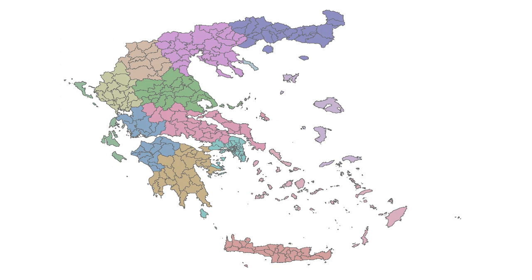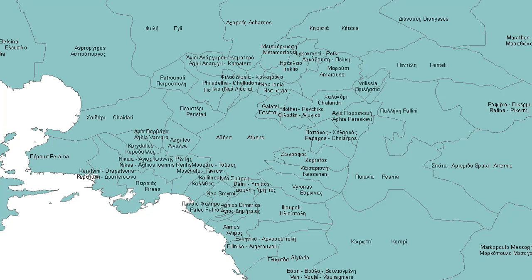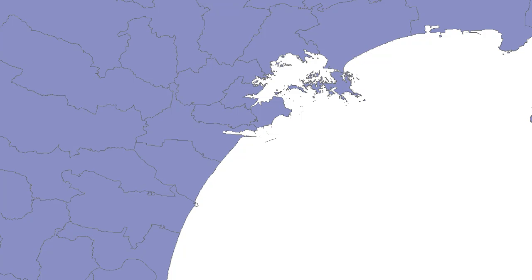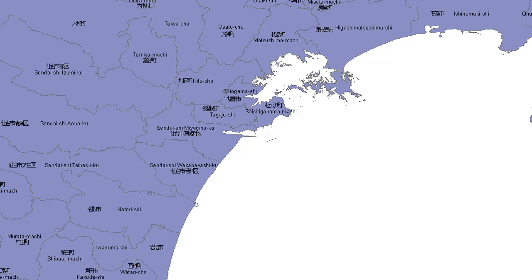We're also very excited to show you our Admin 2 boundary layer. We've heavily developed this layer. This is Greece. When zooming in on the Athens area, you can see not only we have the local name, but the English name as well. We've also developed Japan for second level boundaries. When zooming in on the Sindai area, you can see we have not only the local name, but the English name as well.